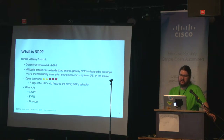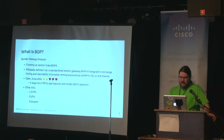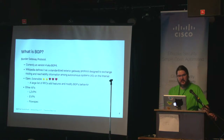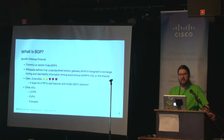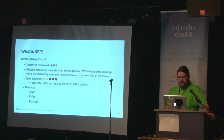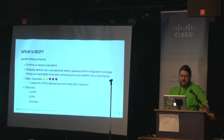BGP is open and extensible, which is part of the reason why it's been so successful. There's a large list of RFCs that add features and modify BGP's behavior. This year I was actually recognized as a contributor — not an author, but a contributor — to an RFC, which was something I wanted to get involved in. As a result of BGP being open and extensible, there are other address families: Layer 2 VPN, eVPN, and FlowSpec, which is used for DDoS mitigation.